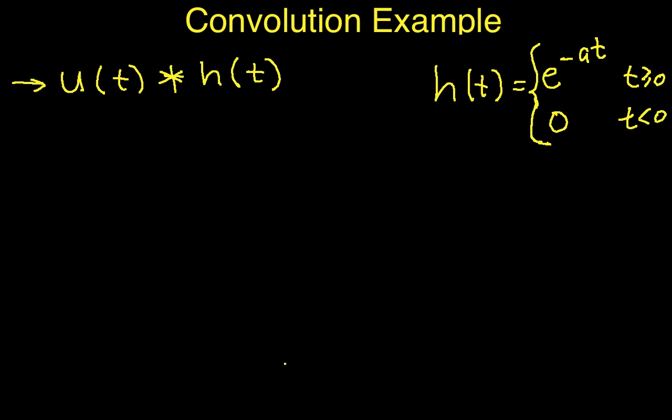This is part two of the video doing a simple example of a convolution, actually computing a convolution. In the previous video, we convolved h of t with u of t, and in this video, we're going to convolve u of t with h of t.